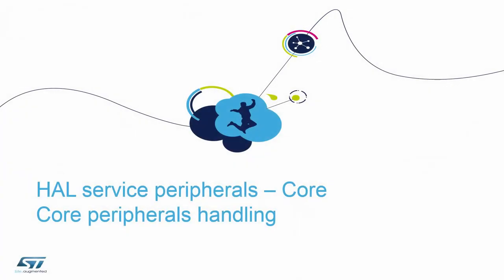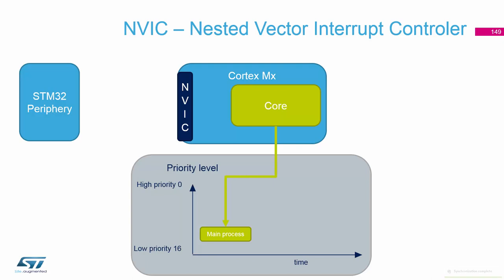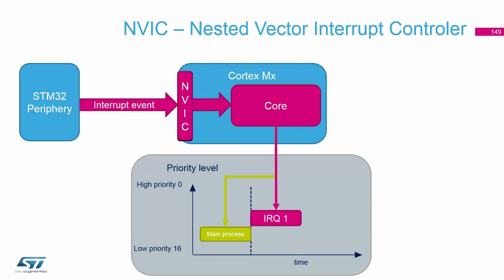We're running usually in the main while loop in main.c. When the STM32 periphery detects the interrupt — and we configure the periphery to create the interrupt — we send the interrupt event to the NVIC. In case the interrupt is enabled in the NVIC, the NVIC will notify the core. The core stops the processing of the main process and goes into the interrupt handler.